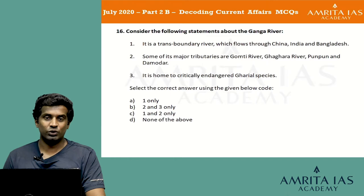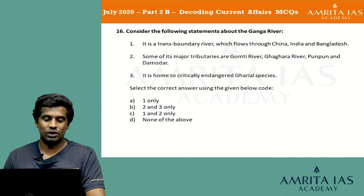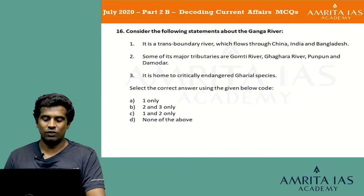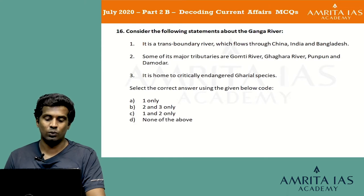Consider the following statements about the Ganga river: 1) It is a transboundary river which flows through China, India and Bangladesh. 2) Some of its major tributaries are Gomti, Ghagra, Punpun and Damodar. 3) It is home to the critically endangered gharial species. Select the correct answer: option A 1 only, option B 2 and 3 only, option C 1 and 2 only, option D none of the above.